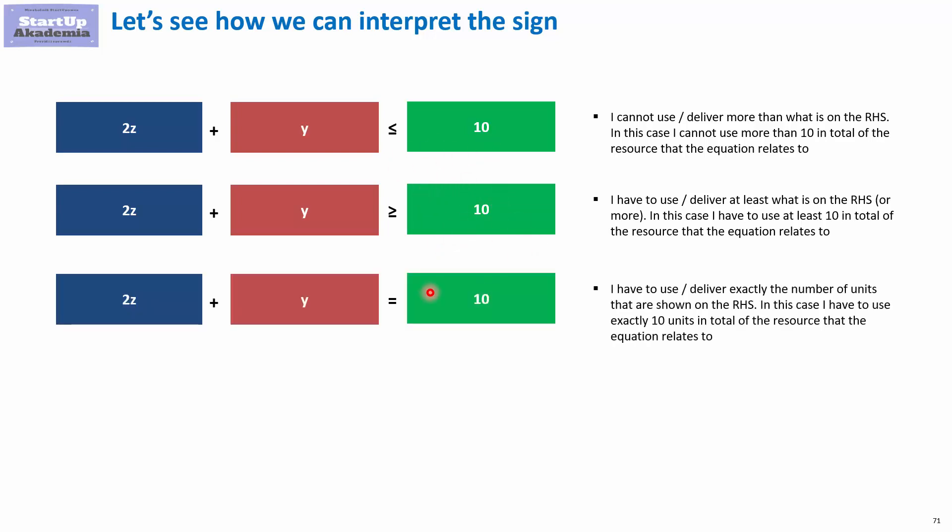Finally, we can have just the sign equal, and this obviously means that I have to use or deliver exactly the specified number on the right-hand side. So I have to use or deliver exactly 10 units in total of this resource that the equation relates to. So it can be equal or smaller, bigger or equal, and then equal.